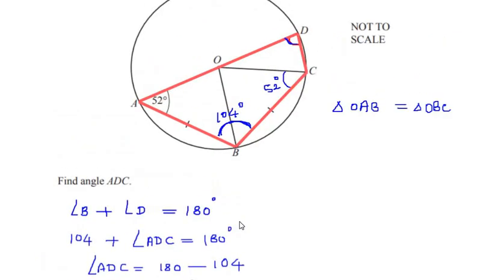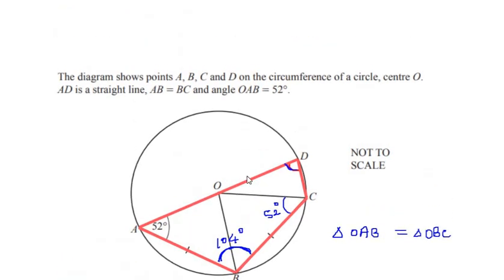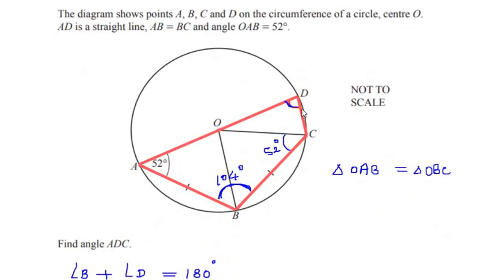This is how we find the given angle. The key steps are: recognizing the two congruent triangles so the angles are equal, combining the angles to get 104 degrees, and then applying the cyclic quadrilateral theorem to find angle D. Hope you understood all the steps — please like, share and subscribe to my channel. Thank you for watching.